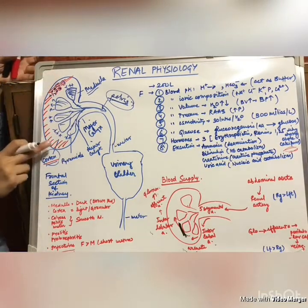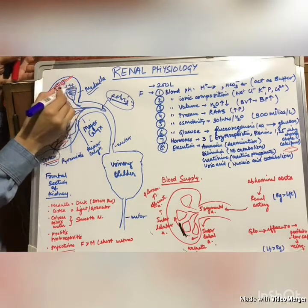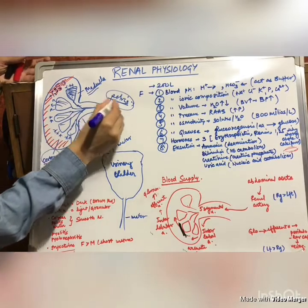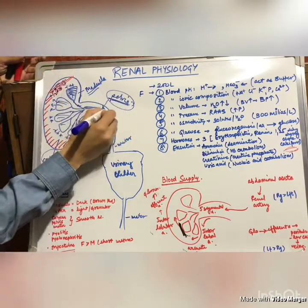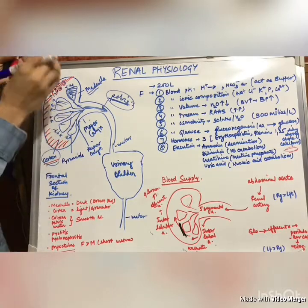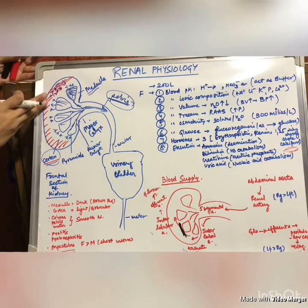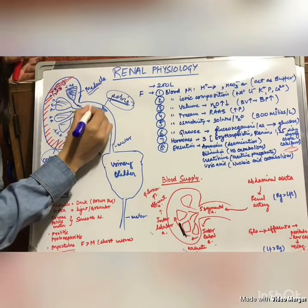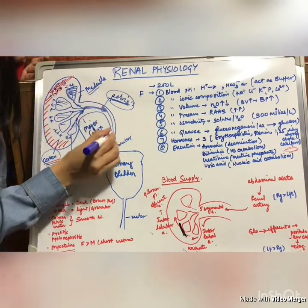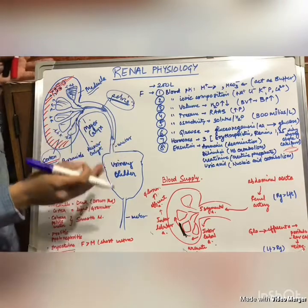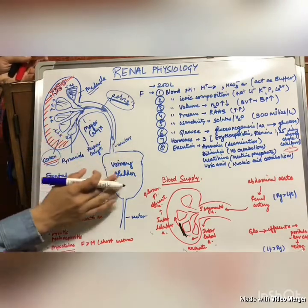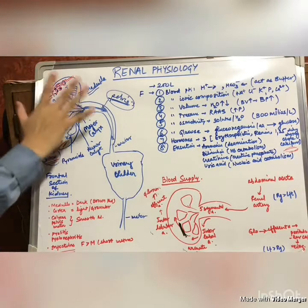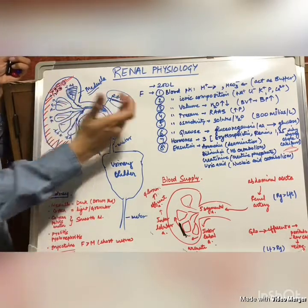outlined in red, the inner medulla which is formed by pyramidal or triangular structures, and the innermost pelvis, outlined in blue. Urine from the pyramids is collected and travels through the minor calyx, then the major calyx, and into the pelvis. From the pelvis it goes into the ureter, then to the urinary bladder, and finally out through the urethra. This is the frontal section of the kidney you are seeing.